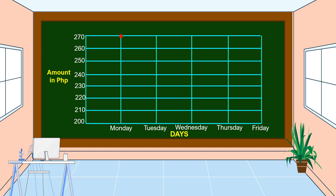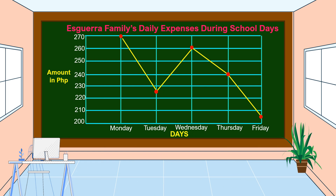For Monday it is 270 pesos, for Tuesday it is 225 pesos — 225 pesos is in between 220 and 230. For Wednesday it is 260 pesos, for Thursday 240 pesos, and for Friday it is 205 pesos — found in between 200 and 210. After we plot all the points, we connect them. Don't forget to put a title; the title is Sguera Family's Daily Expenses During School Days. This is an example of a single line graph.